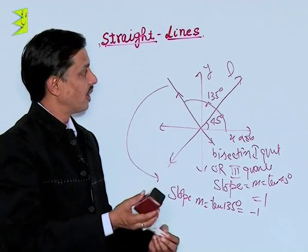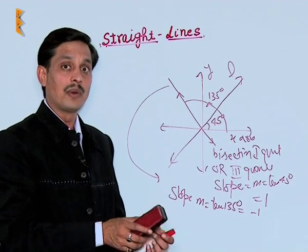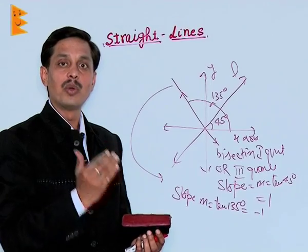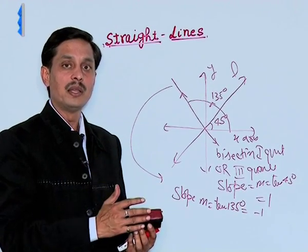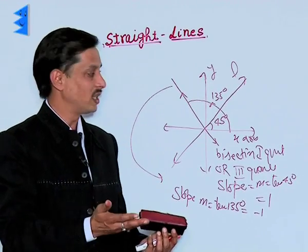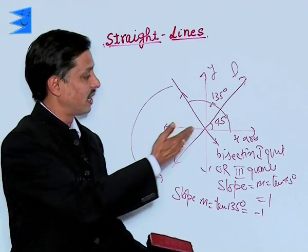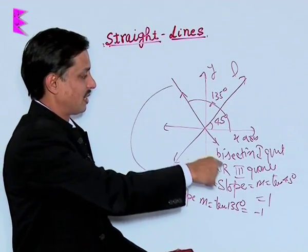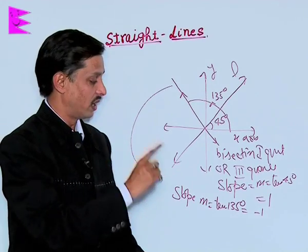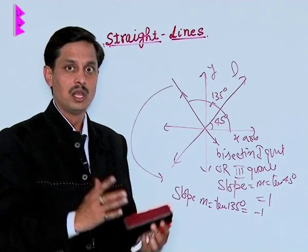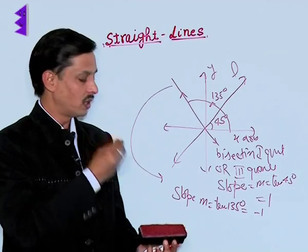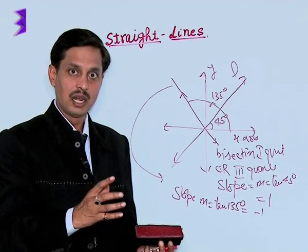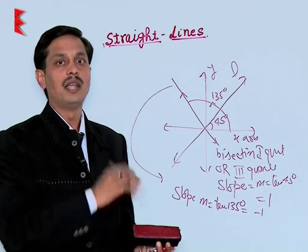To summarize: if a line is parallel to the X-axis, slope is 0; perpendicular to the X-axis, slope is infinity — and vice versa. If a line bisects the first or third quadrant, slope is 1; if it bisects the second or fourth quadrant, slope is −1. The slope is the tangent of the positive angle between the line and the X-axis.